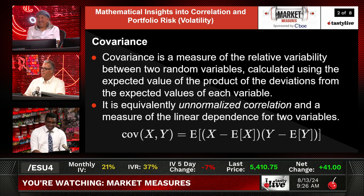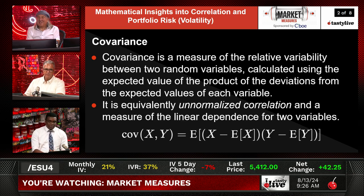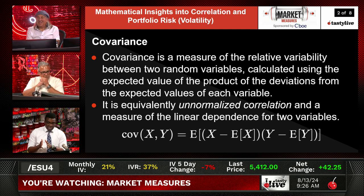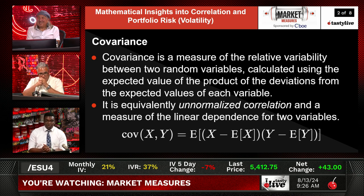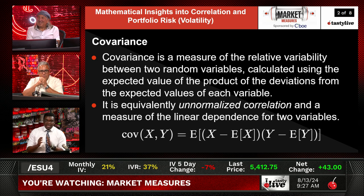Let's try to simplify this using these mathematical equations. We have two different random variables, X and Y. Let's split this formula into three different parts. First, you're going to see E, EX, EY — the expected value of X and the expected value of Y. E of X means the expected mean value of random variable X, and EY means the expected mean value of random variable Y.